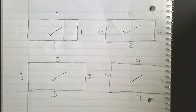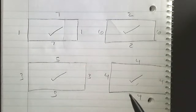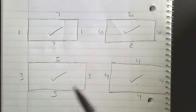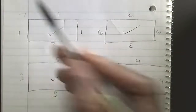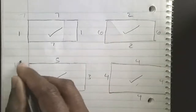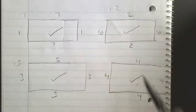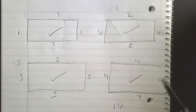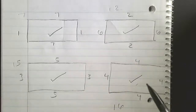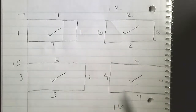To answer the second part: do they have the same area? It is possible for rectangles to have the same perimeter but different areas. One times seven equals 7; three times five equals 15; six times two equals 12; and four times four equals 16. So they have different areas but the same perimeter of 16 feet.